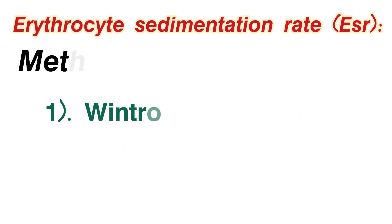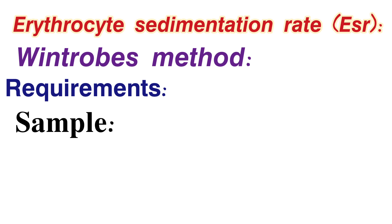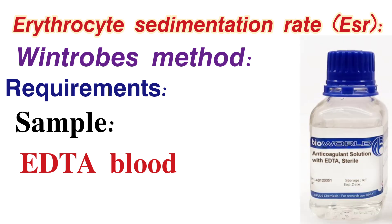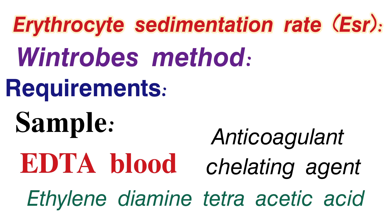The first is the Winthrobe method. For the sample, we collect the patient's blood and add EDTA — an anticoagulant chelating agent. EDTA stands for ethylenediamine tetraacetic acid. This is the chemical solution mixed with the blood sample.